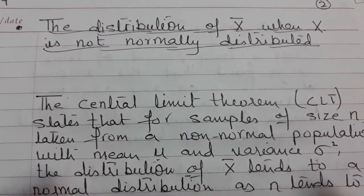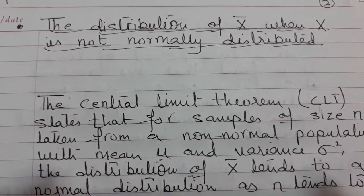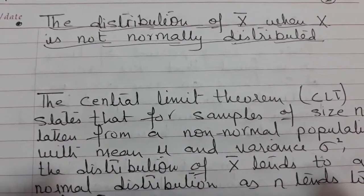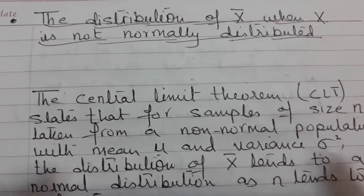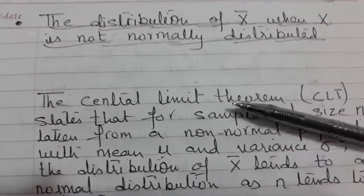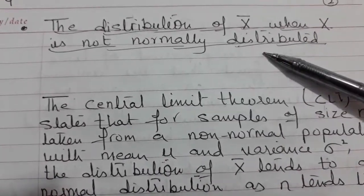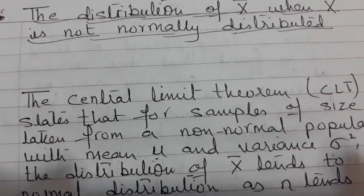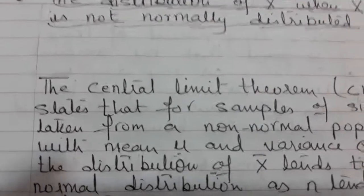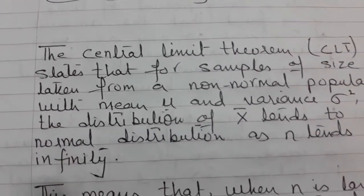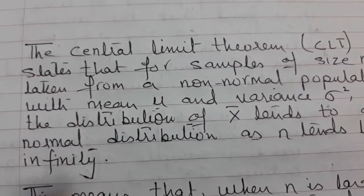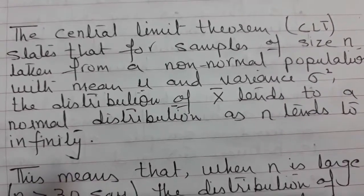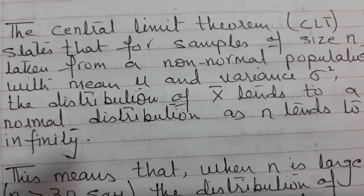In the previous video we took a sample from a normally distributed distribution, and the sample mean distribution was also normal. Now we will see that if the sample is taken from a distribution which is not normal, how do we calculate the probability. We need to understand what the Central Limit Theorem is.